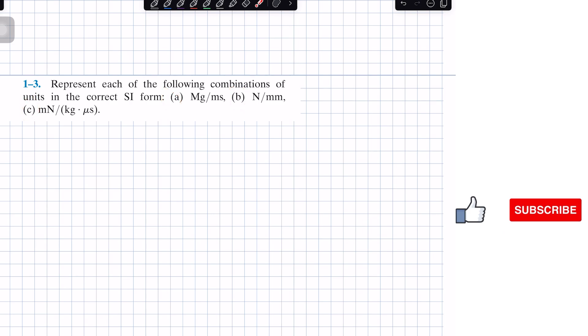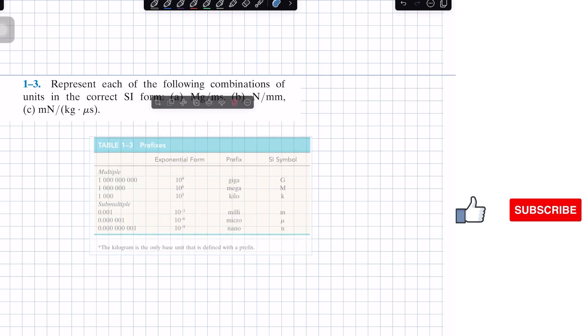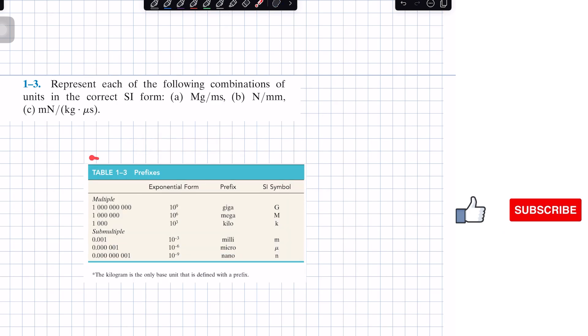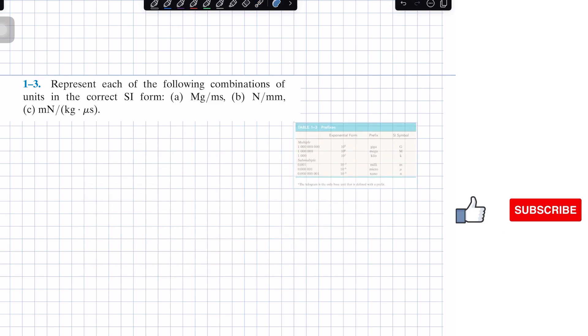The way we're going to solve this is the same as problem 1.2, which I'm going to link in the video down below. Basically what we're doing is utilizing this table, table 1.3, and we're going to look into these prefixes and equal them to their exponential form. At the end, we're going to change from our exponential form back to our prefix, and you will see how we can simplify to their correct form as stated in the problem. So let's start with problem A.